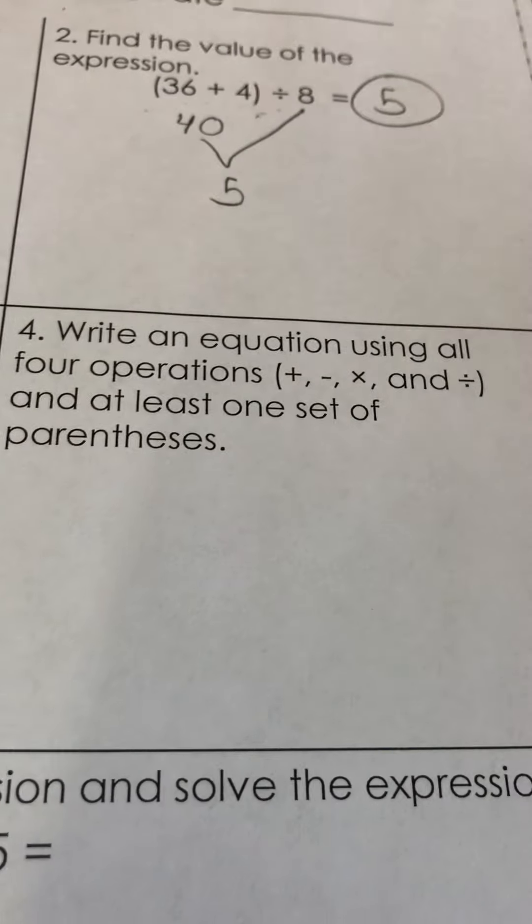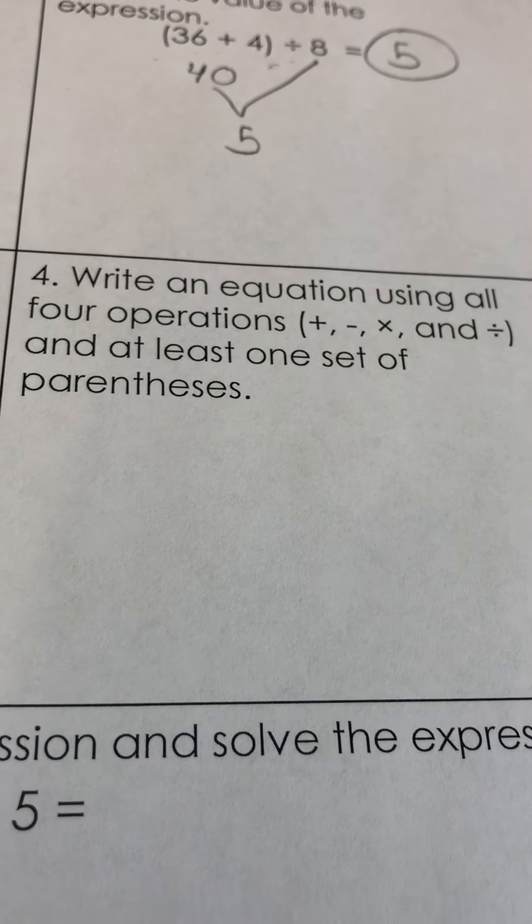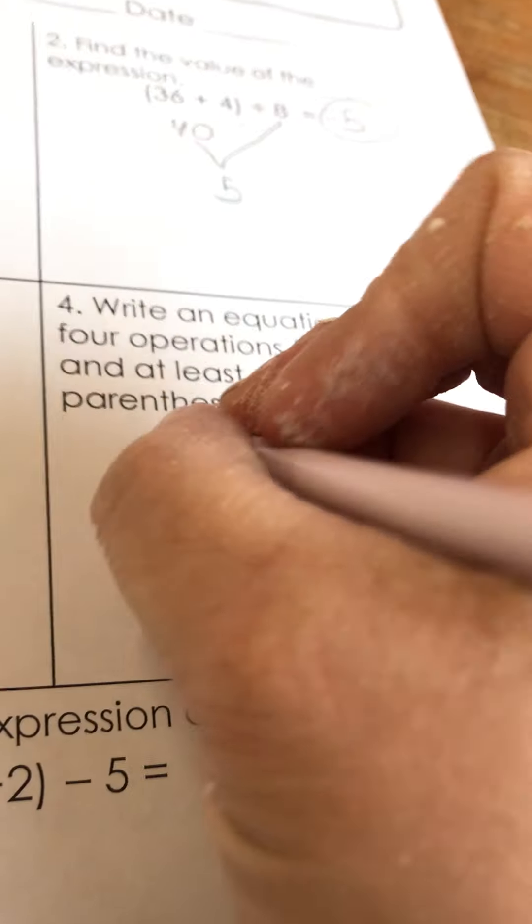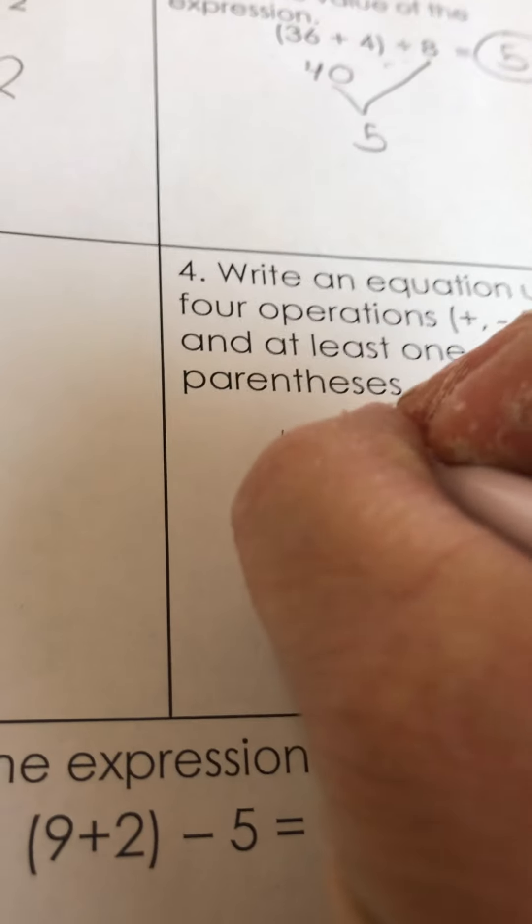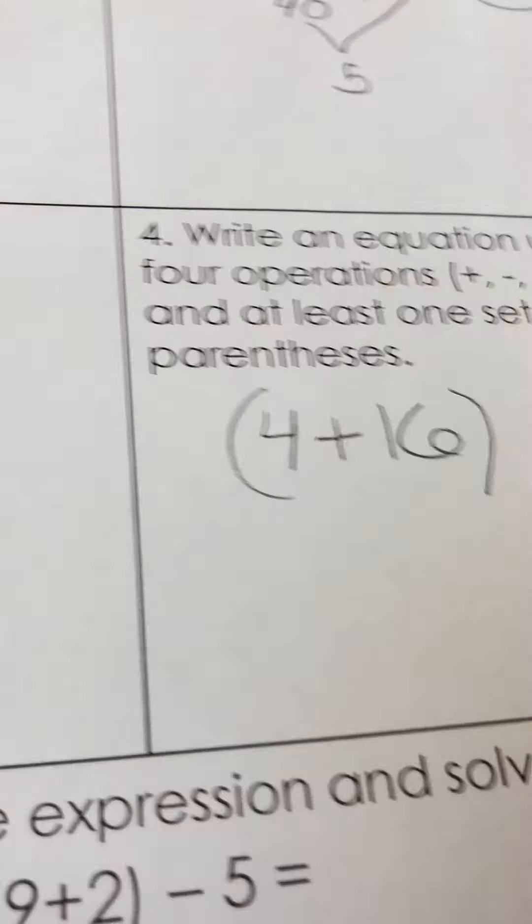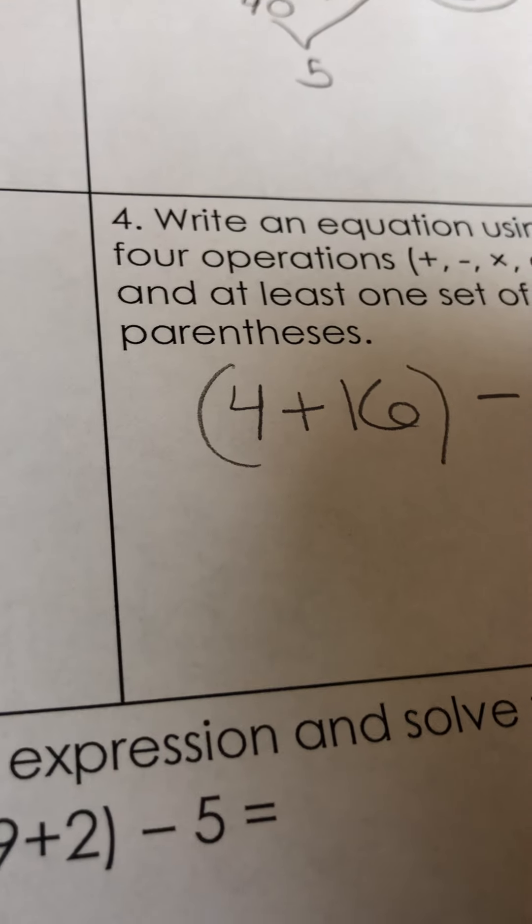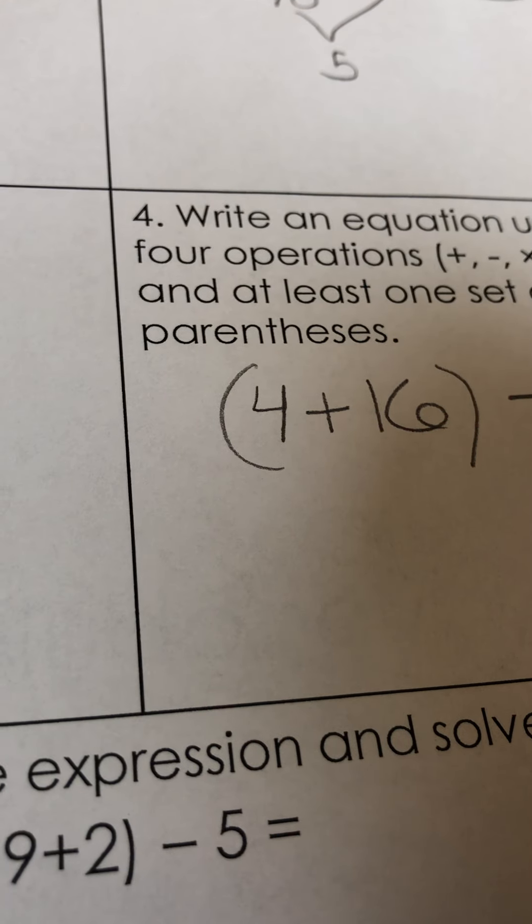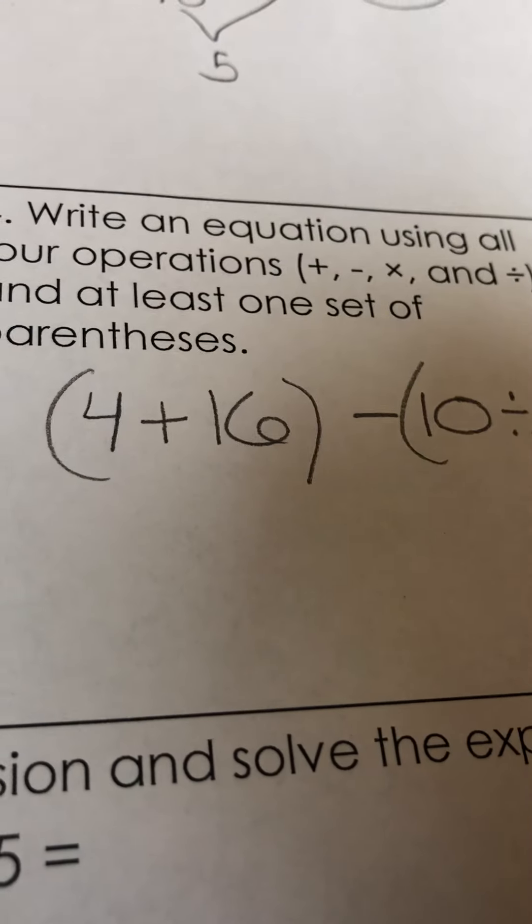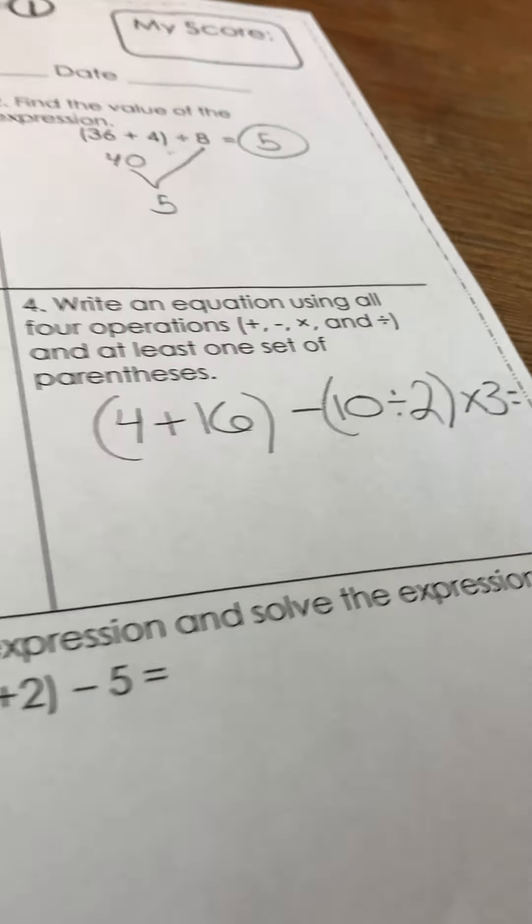Write an equation using all four operations and at least one set of parentheses. Okay, so I can just use any numbers here. So I'm going to do 4 plus 16, I'm going to go ahead and put that in parentheses, minus 10 divided by 2. I'm also going to put that in parentheses. Then I'm going to go times 3 equals. So let's find the answer.